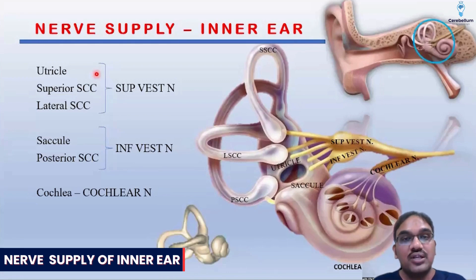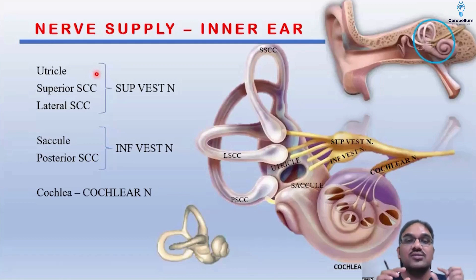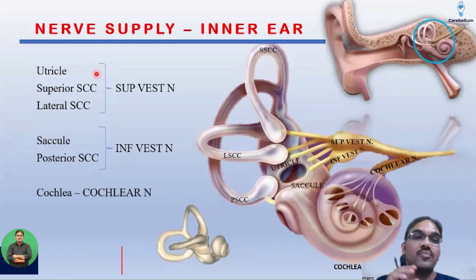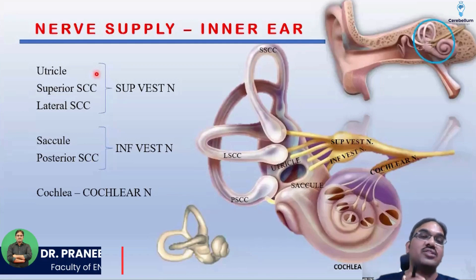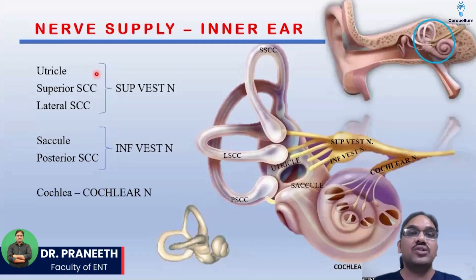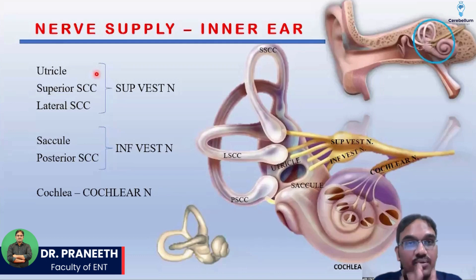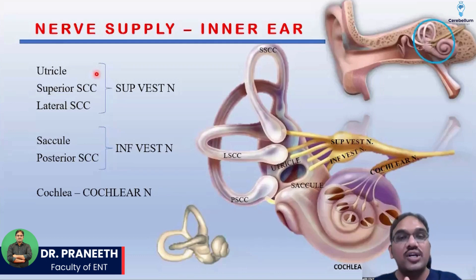Coming to the nerve supply of the inner ear — the sense organs are located, you know, the hair cells. From the hair cells, the information has to be carried towards the brain. The sound information from the cochlea is carried by the cochlear nerve, also called the auditory nerve, which arises from the cochlea.